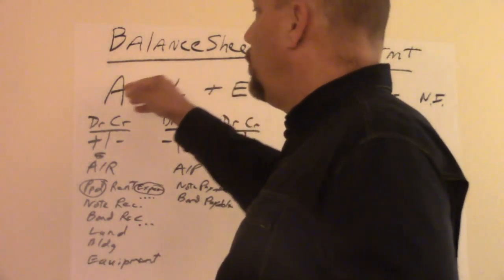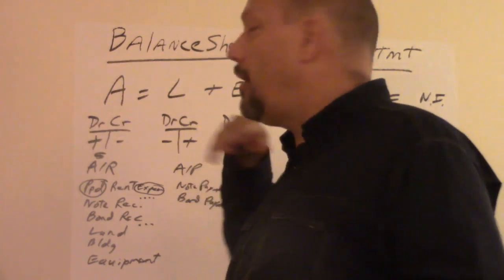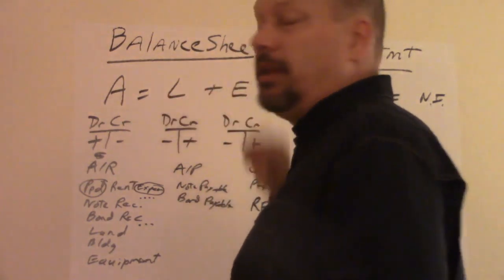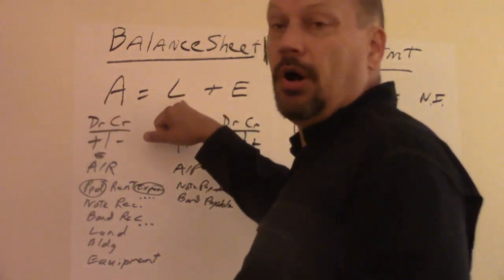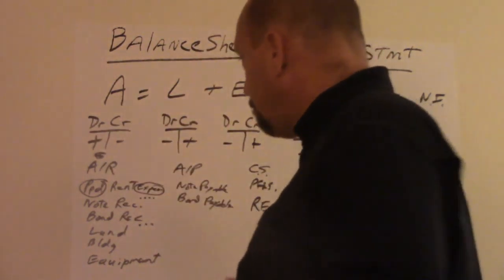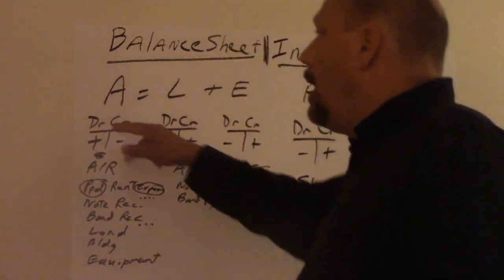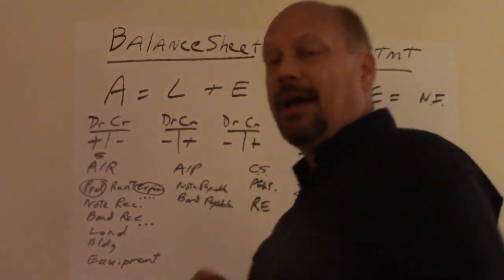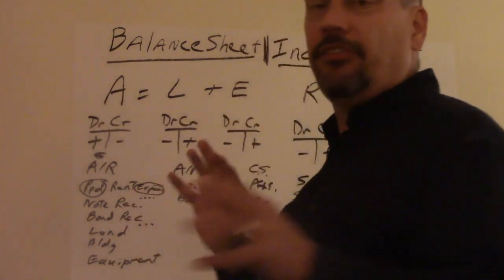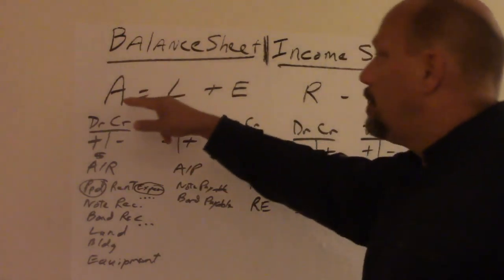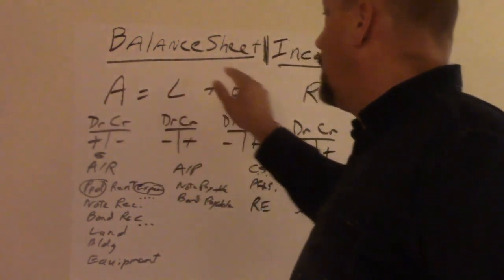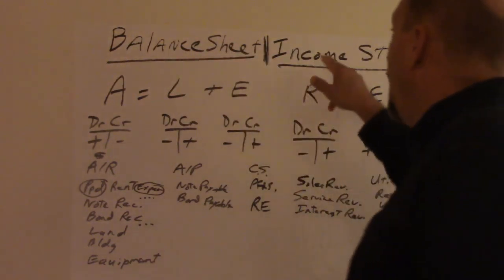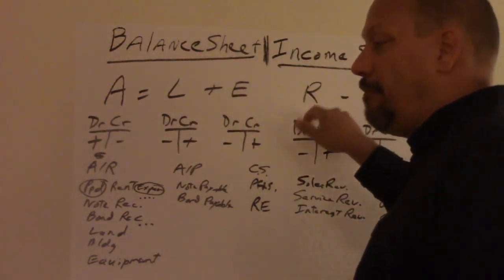The main two are balance sheet and income statement. With the balance sheet we have the accounting equation: assets equals liabilities plus equity. What you own, what you owe, your net worth idea. Every one of those will have a column with debit and credit.